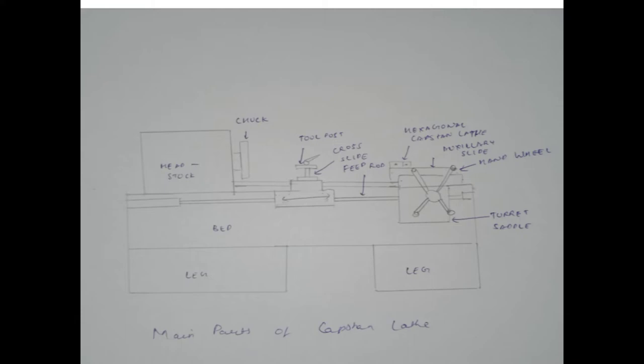Legs bear the entire load of the machine. Each leg carries two legs, one below each end of the bed. These legs are hollow castings which bear the entire load of the bed, sliding parts, tooling, and work holding devices. The left leg also houses several mechanisms such as electrical strip and oil pump.